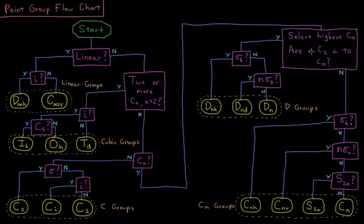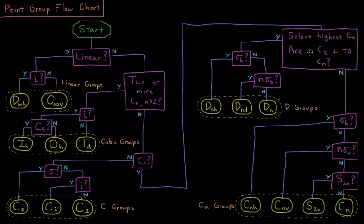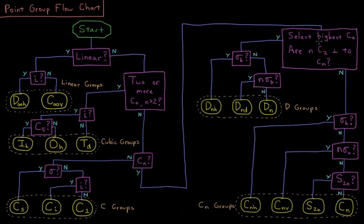are there n C2s which are perpendicular to that principal axis? So if we have a C3, are there three C2s perpendicular to it? If it's a C4, are there four of them? If it's a C2, are there two of them? If yes, then we're in the dihedral groups.